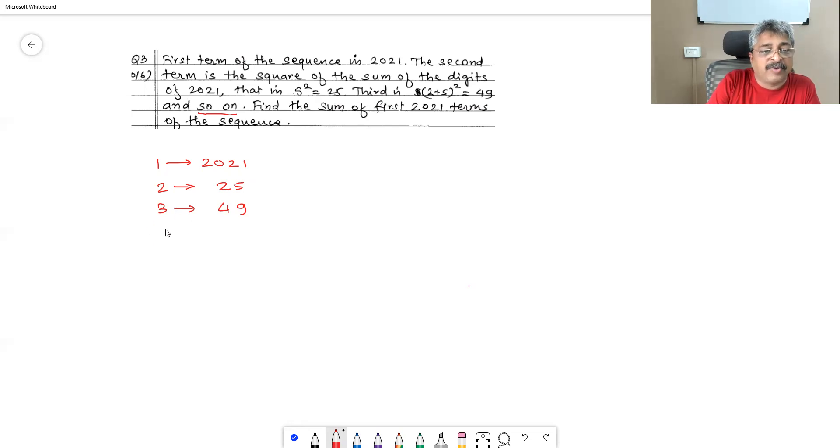So continuing in this fashion, the fourth term is going to be 9 plus 4 that is 13 squared is 169. Fifth term is going to be 256. The sixth term is going to be 169.